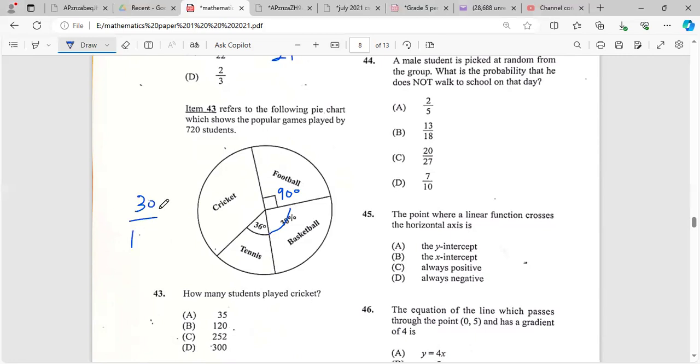So for football, that's 30 percent of 360 degrees, because remember the circle measures 360 degrees. 3 times 36 is 108 degrees. So we can figure out how many degrees goes to cricket by adding up all of this and subtracting it from 360.